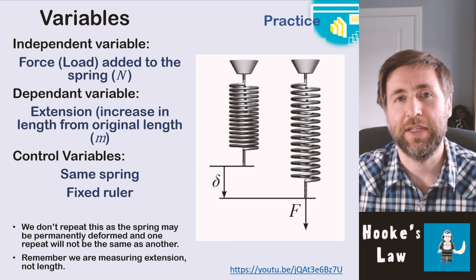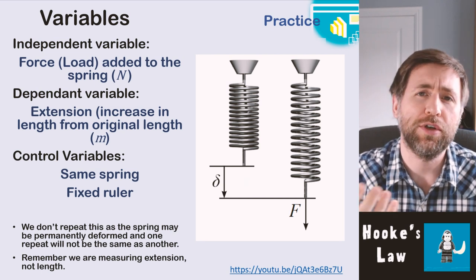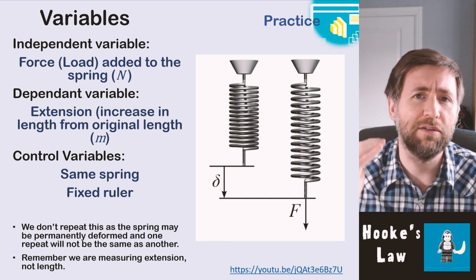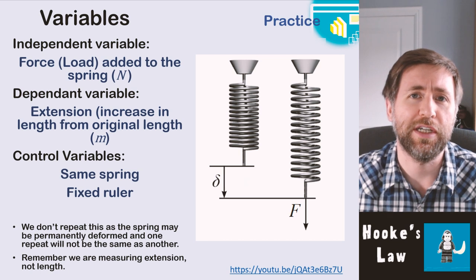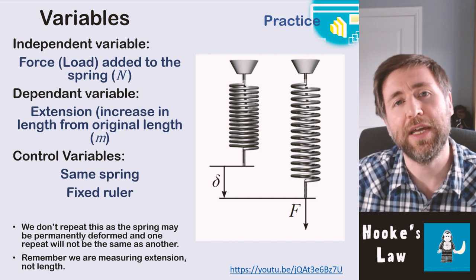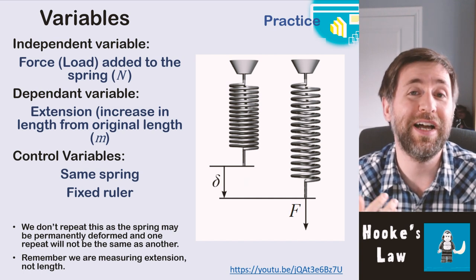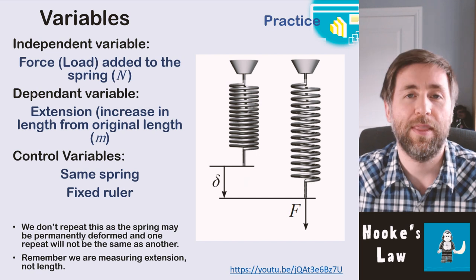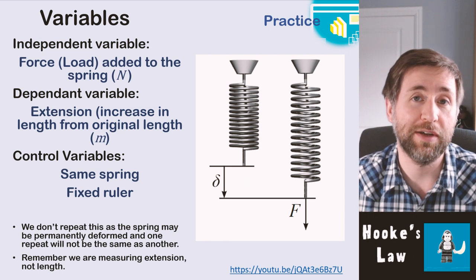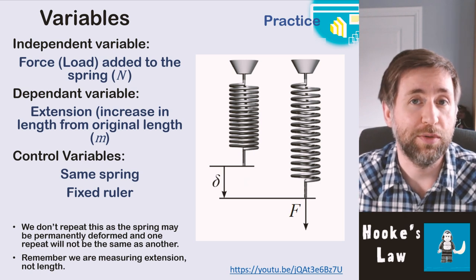The dependent variable is the extension — the increase in length from the original length — and that's going to be in meters. The control variables: we're going to use the same spring throughout and fix a ruler in place so that zero, the original length of the spring, doesn't change during the whole practical. This is a practical we don't repeat because we're expecting the spring to behave differently by the end, and remember we're measuring extension, not length.